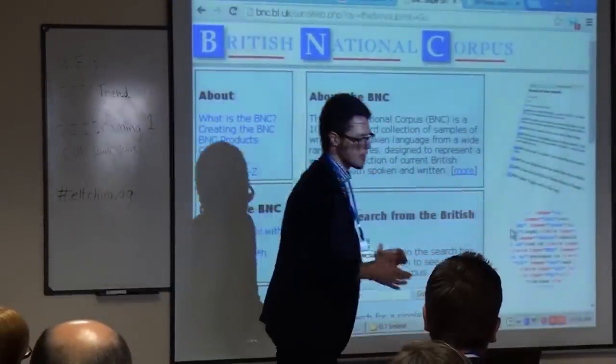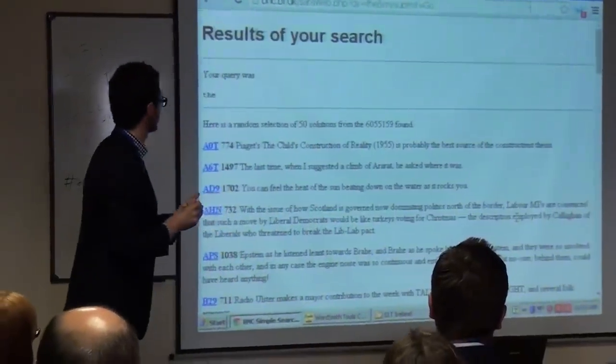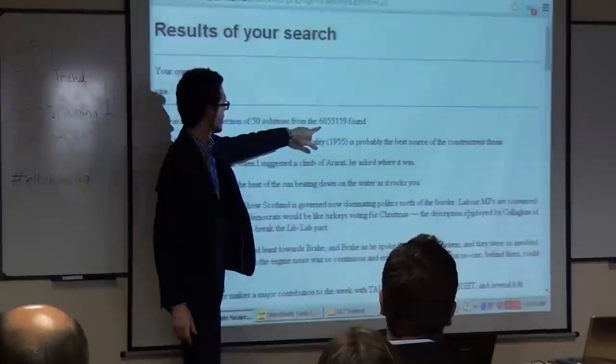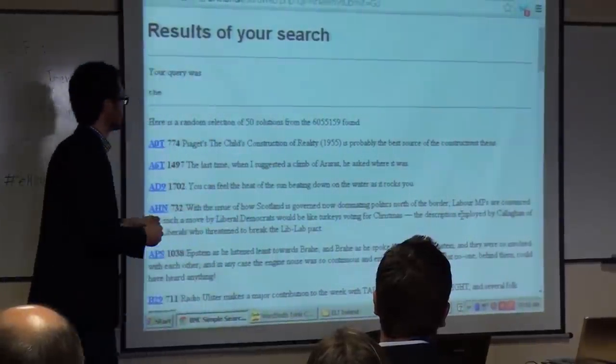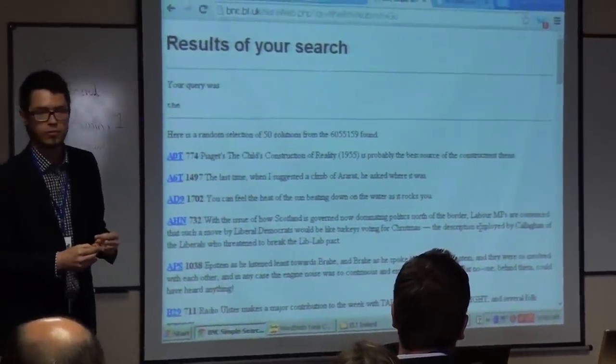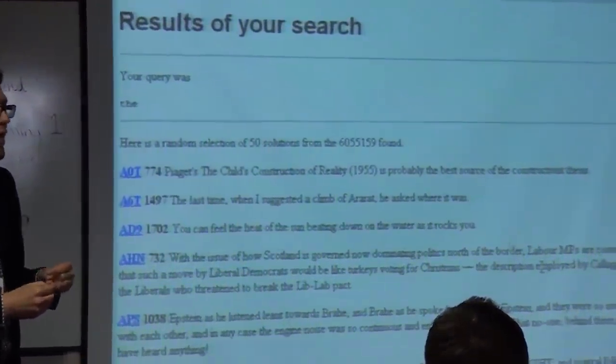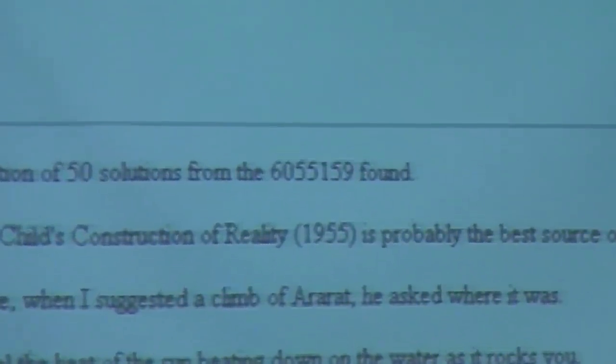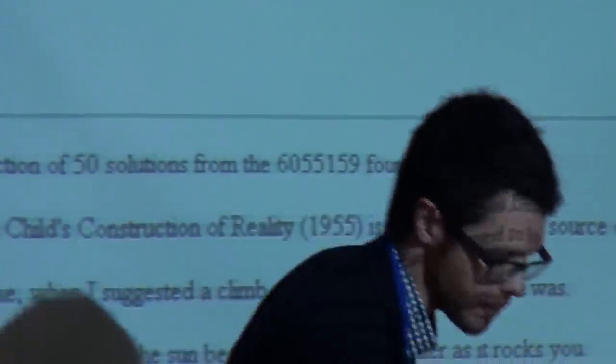As you can see, it's a hundred-million-word collection of samples of written and spoken language from a wide range of sources, designed to represent a wide cross-section of current British English. So why don't we type in 'the' and see what we get. How many? 6,055,159 in a corpus of a hundred-million-words. So as we said before, just over 6%.